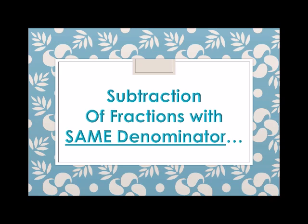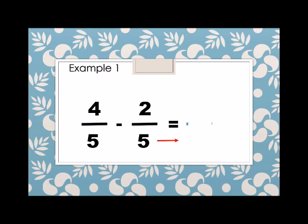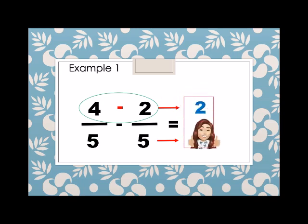Now we proceed to subtraction of fractions with the same denominator. Example number 1, we have 4 over 5 minus 2 over 5. Here we have the same denominator, so the denominator of the answer is also 5. And then we simply subtract the numerators — the same as we do in addition, but this time we subtract. So 4 minus 2, we have 2. So 4 over 5 minus 2 over 5 is 2 over 5.